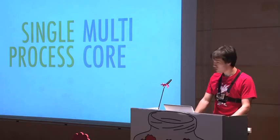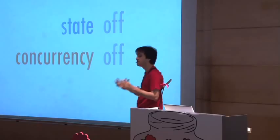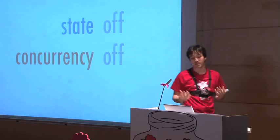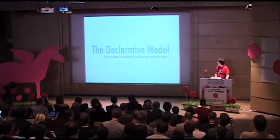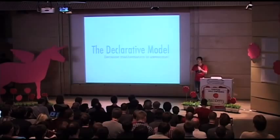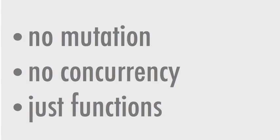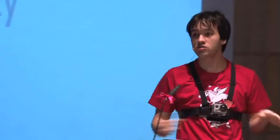To talk about this, I want to go to a beautiful world filled with unicorns — a world where we don't have state and we don't have concurrency, where everything is easy. People that study this kind of stuff call this the declarative model, and it maps a lot to mathematics. In this world there is no mutation; you cannot mutate stuff. If you assign a variable you cannot change its value — it's like mathematics. If x equals one, x equals one, you cannot change it. There is no concurrency; everything is just functions.